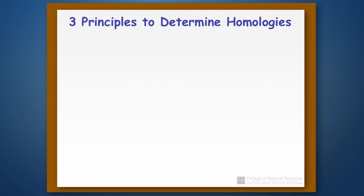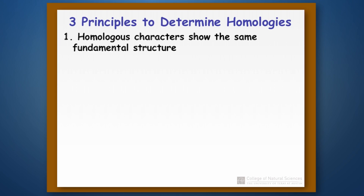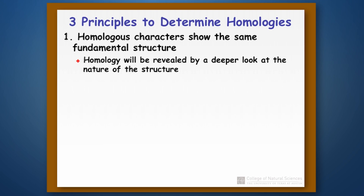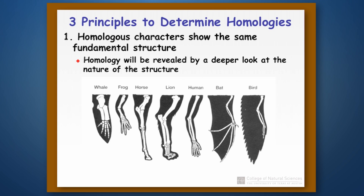There are three general principles we apply to decide whether characters are homologies. The first is that homologies will show the same fundamental underlying structure. The classic example is vertebrate limbs — on the surface they look very different, used for flight, locomotion, or grasping in humans. But if you look at the underlying bones, they're all made of the same set of bones, telling us they likely share a common ancestor and are homologous with one another.